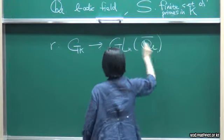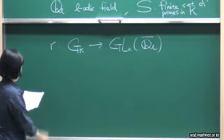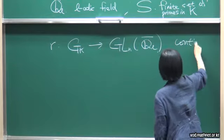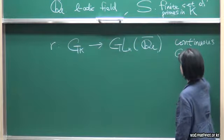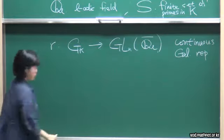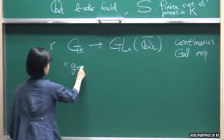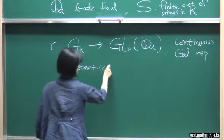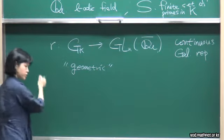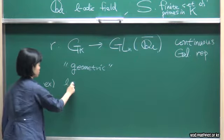Now we can define the representation of the Galois group — it's called the Galois representation. I want the ones that map onto the general linear group of Q_L-bar. First of all, the representation should be continuous. And furthermore, I want this Galois representation to have more properties, which is so-called geometric. To explain what geometric means, let me start from the example of the L-adic cyclotomic character, because this one will be used.